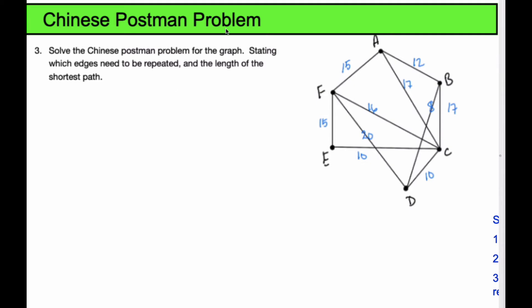Here's another example where we're going to do the Chinese postman problem, or the Czech snowplow problem. To do it, we're going to solve the Chinese postman problem for this particular graph, stating which edges need to be repeated and the length of the shortest path.